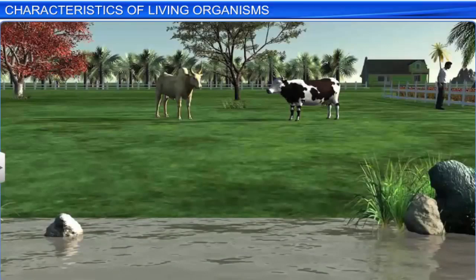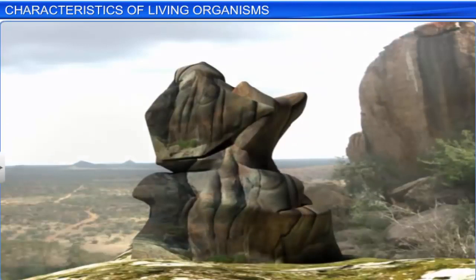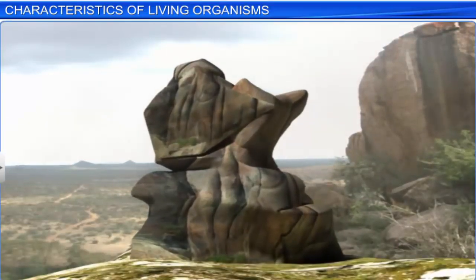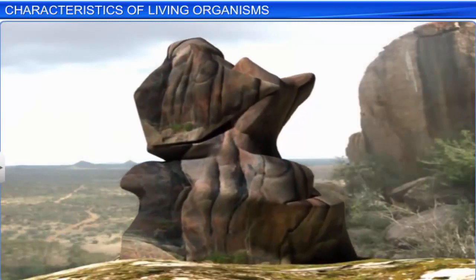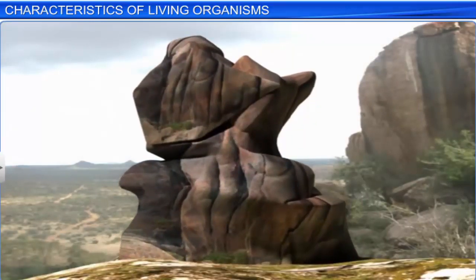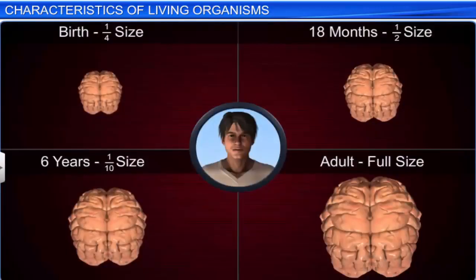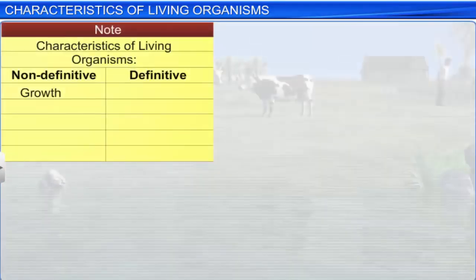However, everything that grows cannot be said to be a living organism. Take the example of a rock that will grow in size if sand gets deposited over it. However, this growth is external. On the contrary, growth in living organisms is internal. Growth is thus a characteristic feature of living organisms, though it is a non-definitive one.